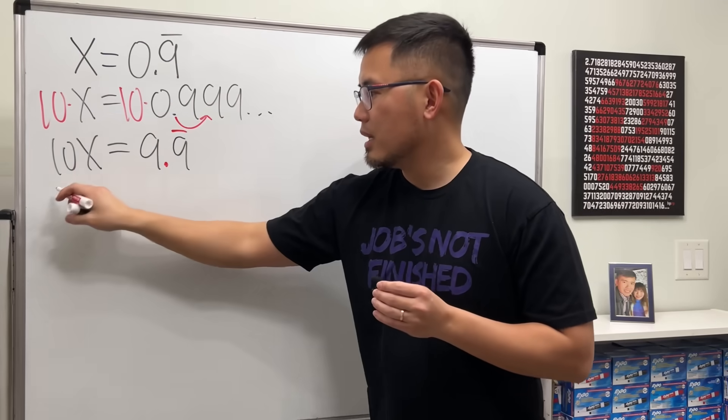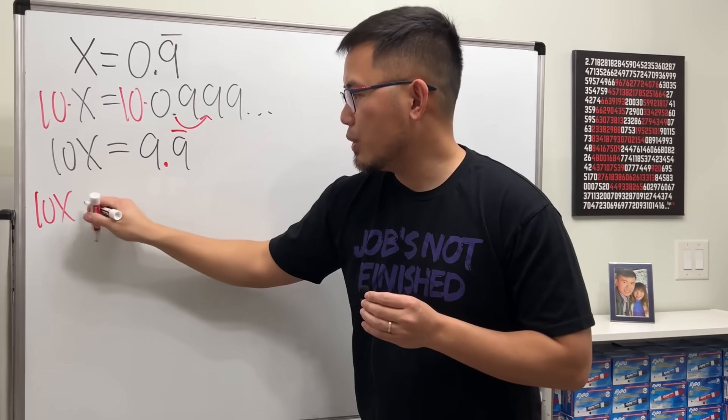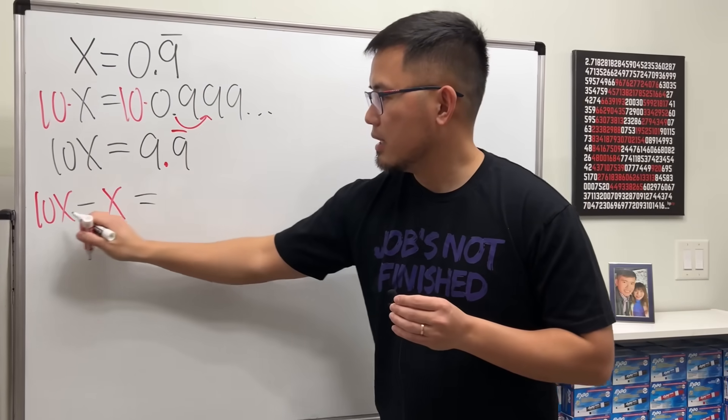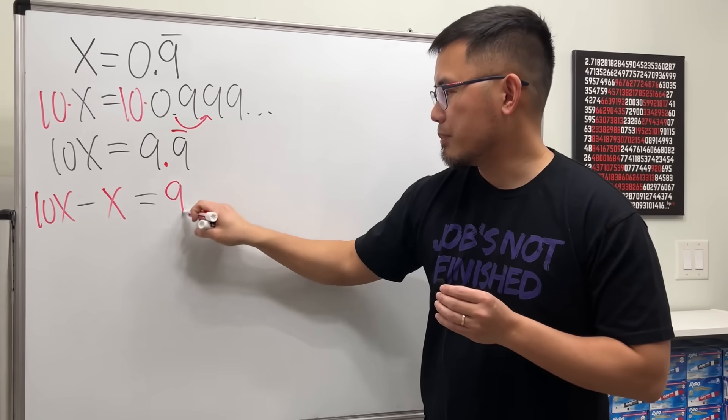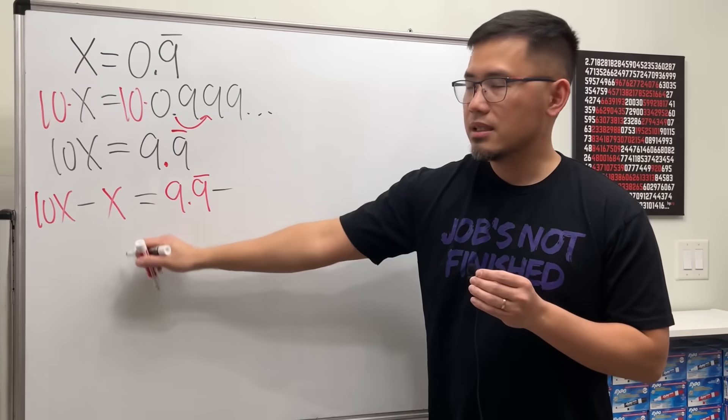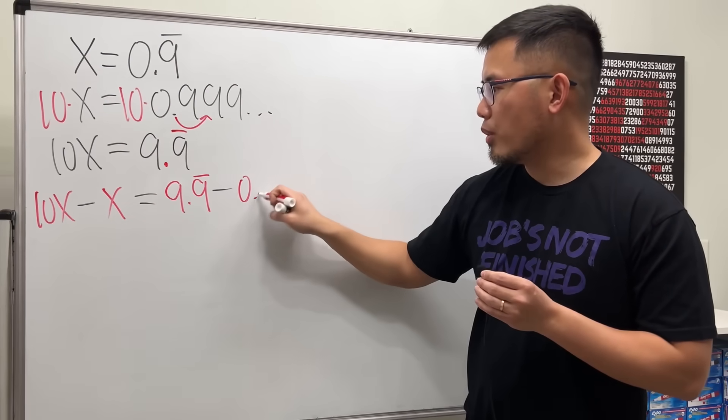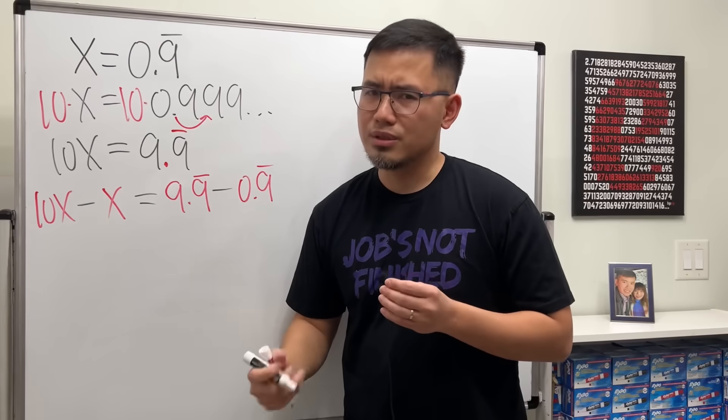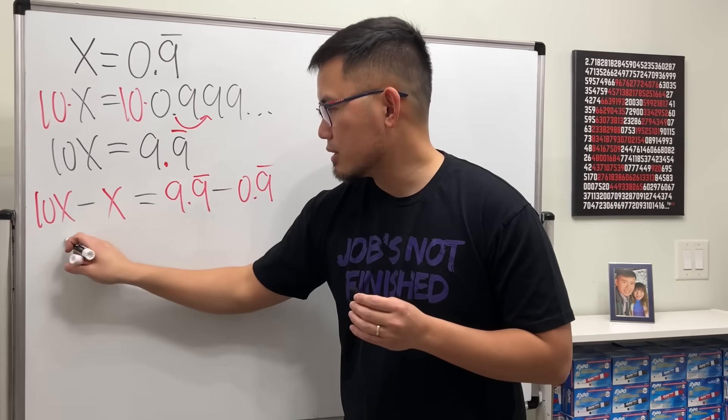What we are going to do is start from 10x, and then we are going to minus x. So this means 10x, which is 9.9 repeating, minus the x, which is 0.9 repeating. On the left-hand side, can we figure this out? Yes. This right here is just 9x.